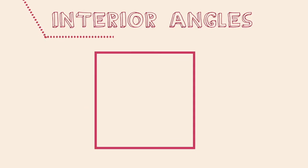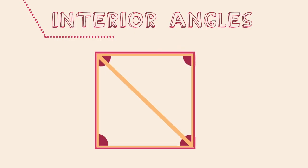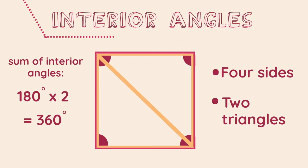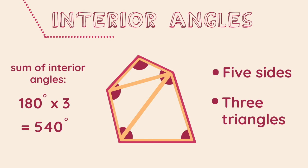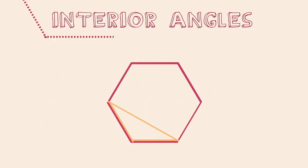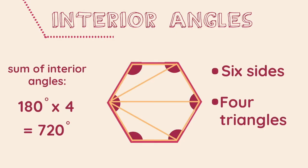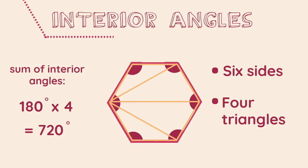Here we have a square. Notice that we can fit two triangles in the square, therefore the interior angles will equal two lots of 180 degrees. Next we have an irregular pentagon in which we can fit three triangles inside, so the interior angles will be equal to three lots of 180 degrees. Here we have a hexagon which can fit four triangles inside, so the interior angles will be equal to four lots of 180 degrees.